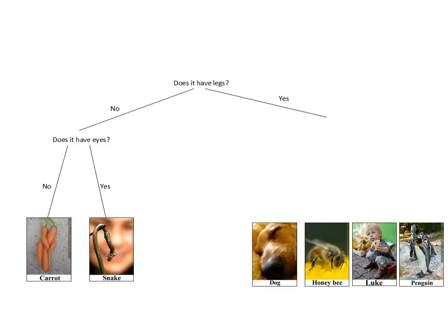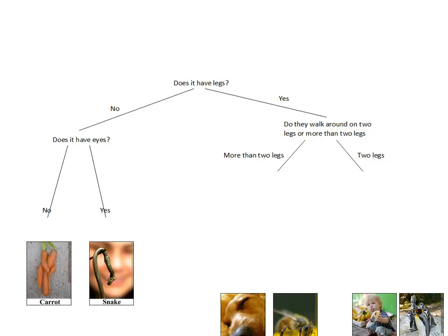Now looking at the organisms on the other side, we notice that two of them walk around on two legs and two of them walk around on more than two legs. So this is the physical feature I will use to separate these organisms. We can quickly move these around into a group with two legs and more than two legs. Finally, we have to find physical features to separate this group and this group, which I have done as follows.